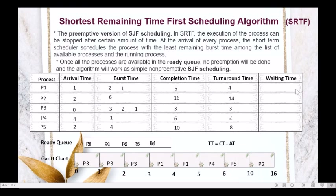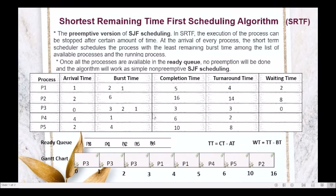Next, we compute the waiting time of each process using the formula: turnaround time minus burst time. P1: 4 − 2 = 2. P2: 14 − 6 = 8. P3: 3 − 3 = 0. P4: 2 − 1 = 1. P5: 8 − 4 = 4.